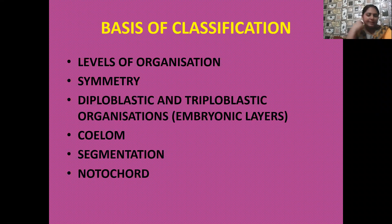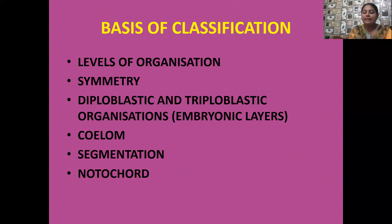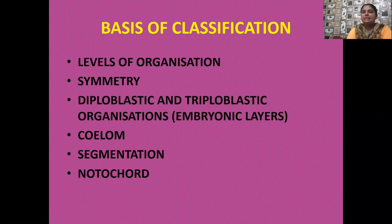Moving to the next phylum, phylum Coelenterata, also known as phylum Cnidaria — in the cnidarians, the cells are arranged in a more complex manner than in sponges. In phylum Porifera, there is a loose aggregate of cells with a little division of labor. But in Coelenterata, these cells are now part of tissues. These tissues consist of cells that are similar in structure and perform similar functions. So in Coelenterata or Cnidaria, we have tissue level of organization.